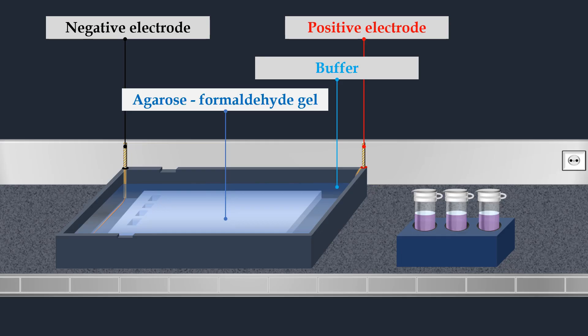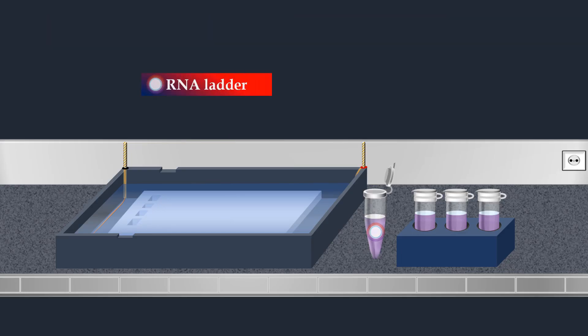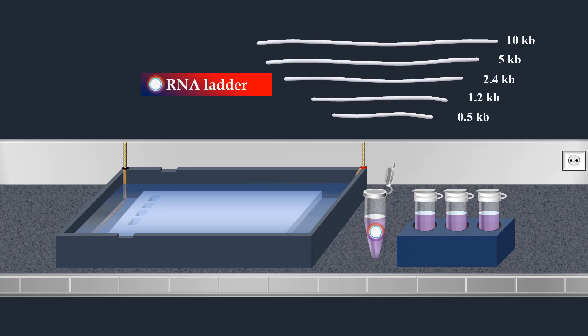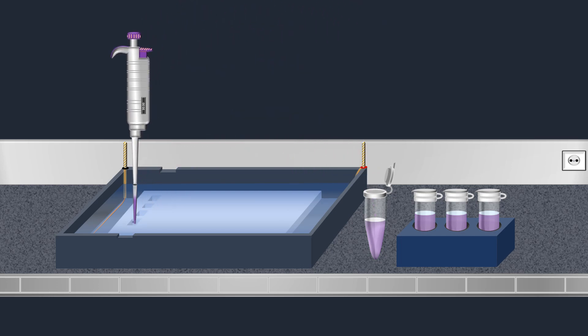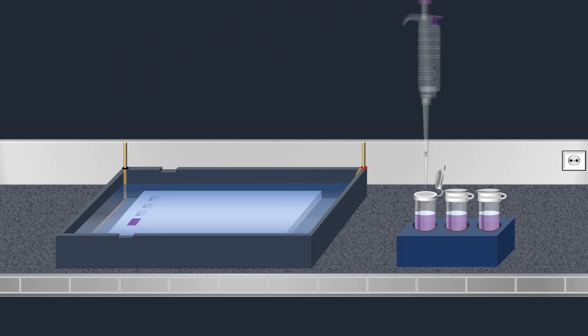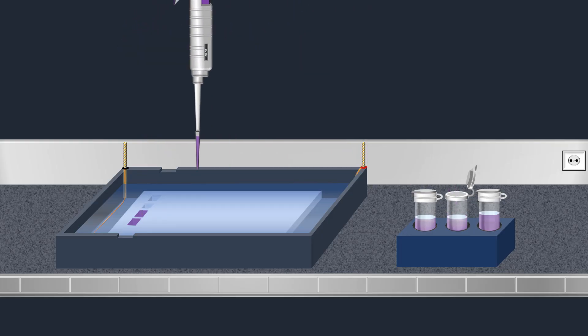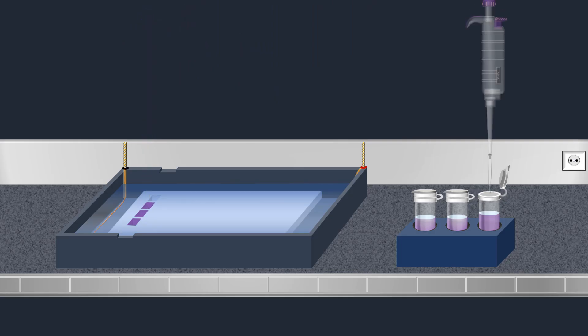During electrophoresis, a molecular weight size marker known as an RNA ladder is commonly used to determine the size of RNA molecules in the samples. The RNA ladder is added into a well at one end of the gel. Once the molecular weight size marker is added, the RNA samples are loaded into wells, then an electric current is applied.